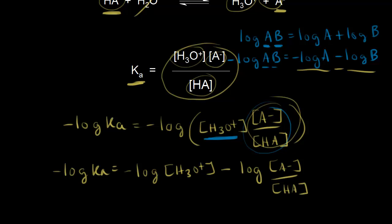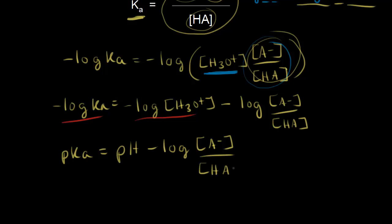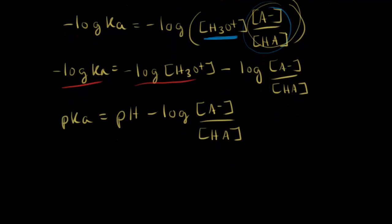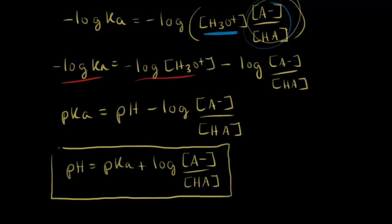The negative log of Ka equals pKa, and the negative log of the concentration of H3O plus equals pH. So we can rewrite this for pH: pH equals pKa plus the log of the concentration of A minus over the concentration of HA. This is called the Henderson-Hasselbalch equation. It's very useful when you're doing buffer calculations. We'll look at examples of this in the next video.